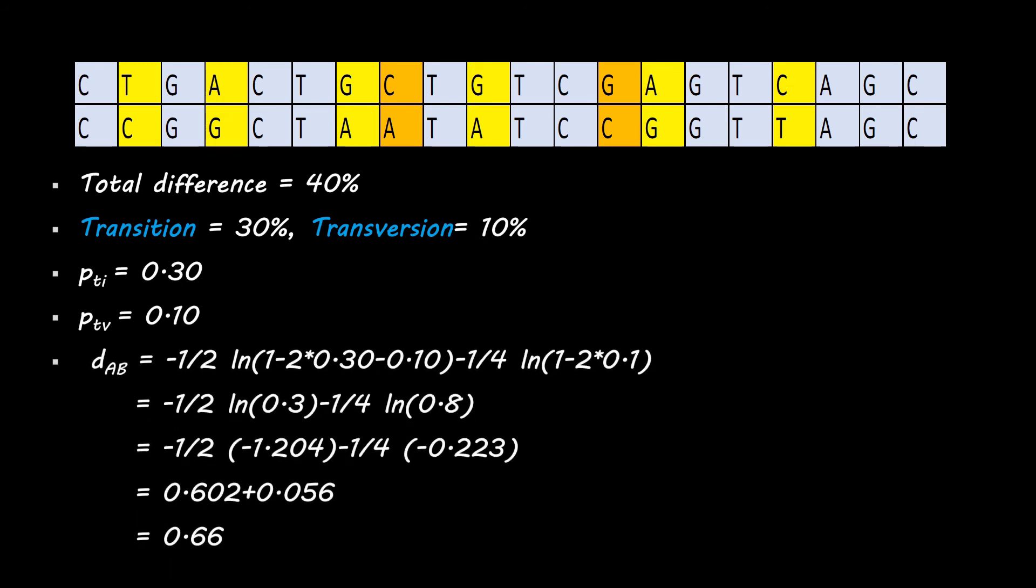So pti will be 0.30, ptv will be 0.10. We can calculate dAB which will be 0.66. This is how we can calculate the evolutionary distance between two sequences, and we can again prepare a distance matrix and process further in the evolutionary tree analysis and construction.